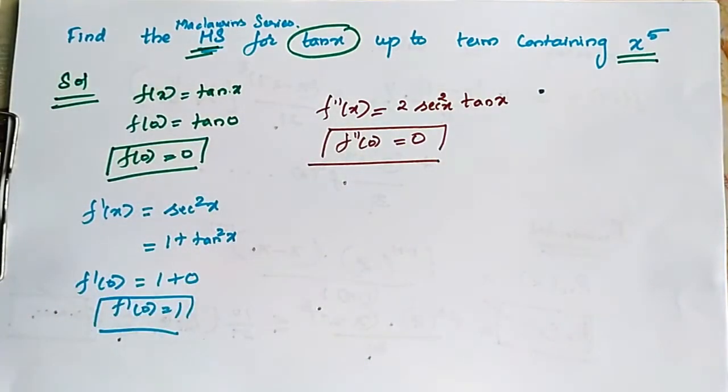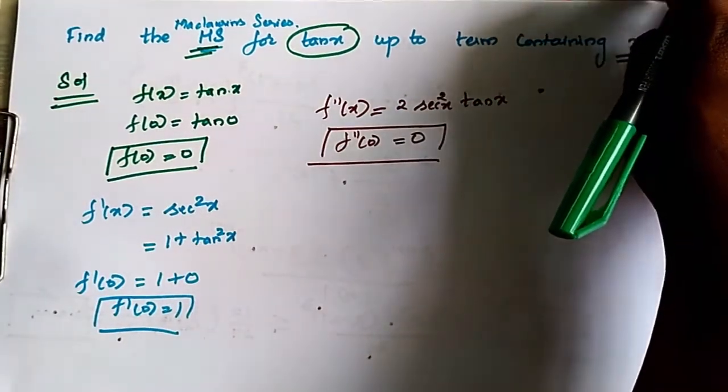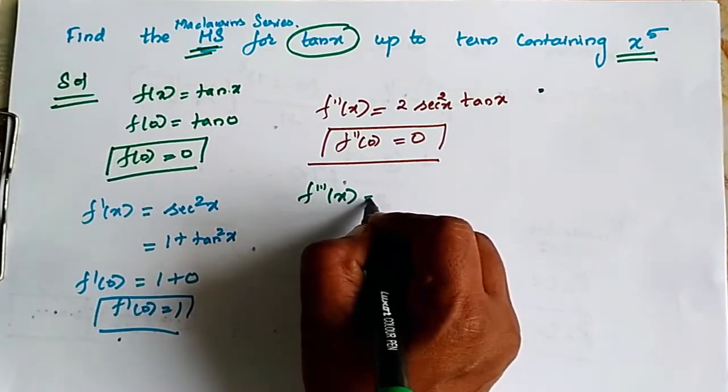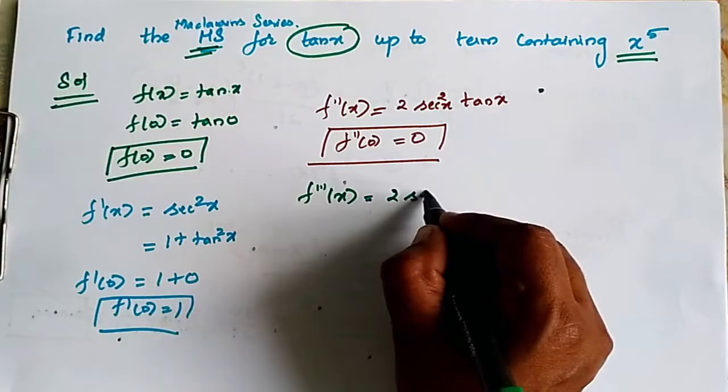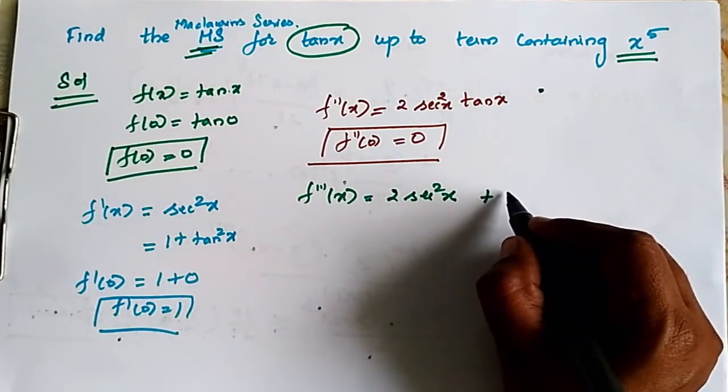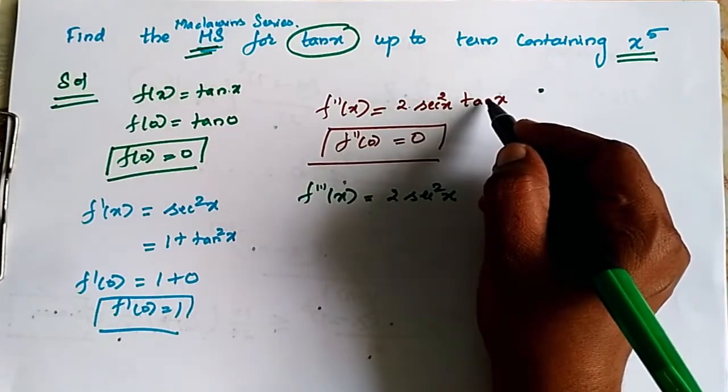Okay next, f triple dash. Using UV formula, we calculate: f triple dash of x is equal to 2 secant square x plus 2 secant square x, differentiation of tan x,